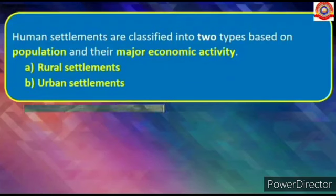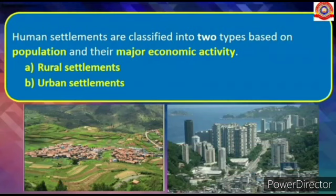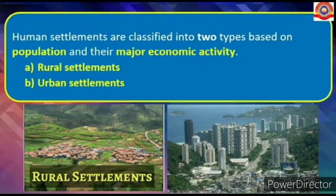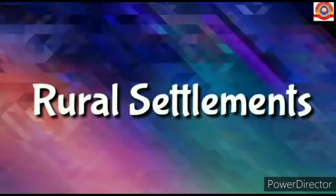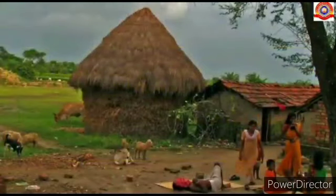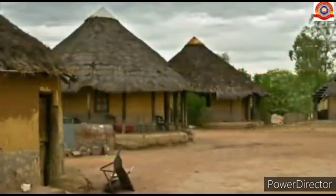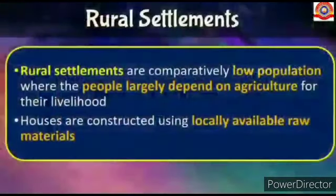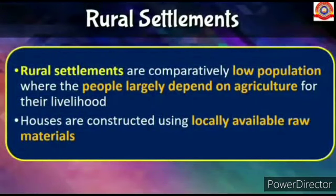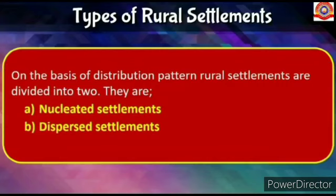Human settlements are classified into two types based on population and their major economic activity — rural settlements and urban settlements. Rural settlements are comparatively low population areas where people largely depend on agriculture for their livelihood. Houses are constructed using locally available raw materials.